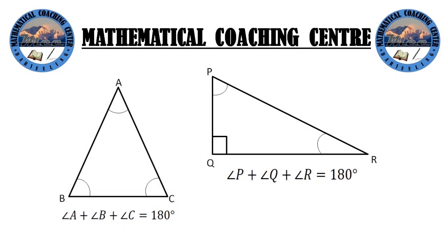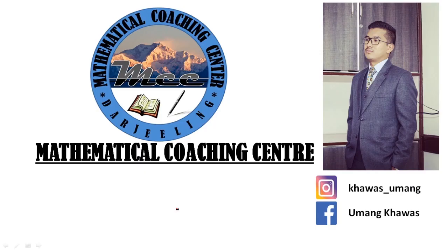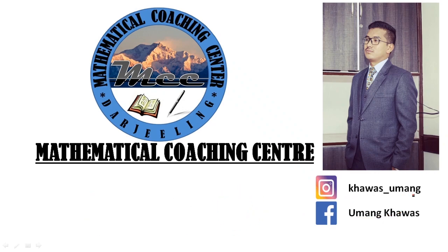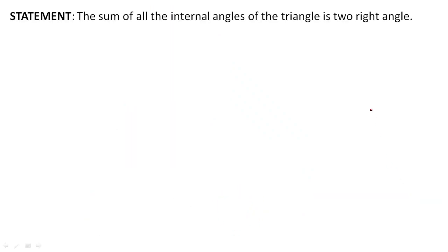Hello and welcome to Mathematical Coaching Center. Today we are going to discuss a very common and well-known result: the sum of all the internal angles of a triangle. No matter what kind of triangle you take, when the internal angles are added, the sum will always be 180 degrees. If you have any problem learning mathematics, consider subscribing to this channel. You can also connect through Facebook and Instagram.